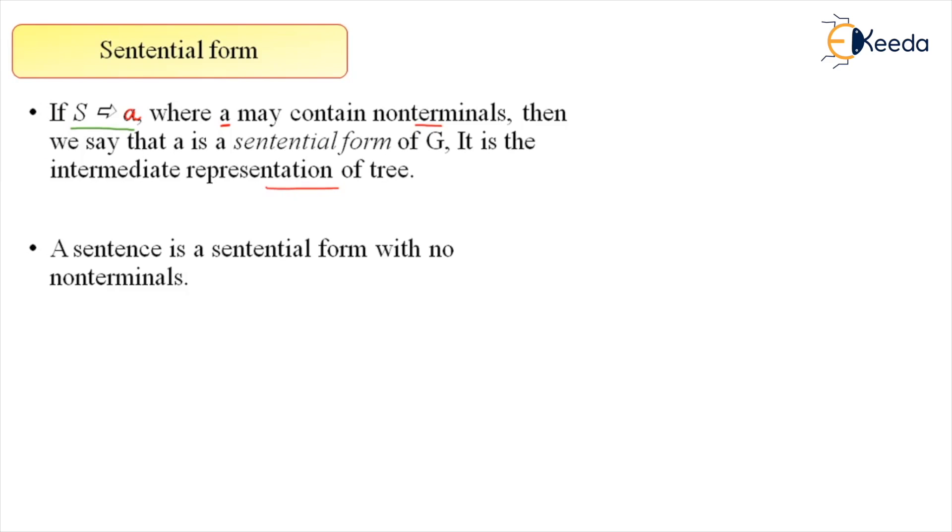So now here, S derives alpha and alpha may contain non-terminals. Basically what it is trying to say, if I take a grammar: S derive A, double A, S, B or A, B. And if I try to derive a string: double A, let's say S, B, and one more time double A, four times A, S, double B.